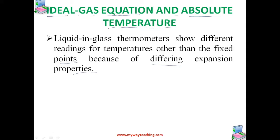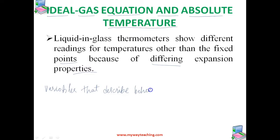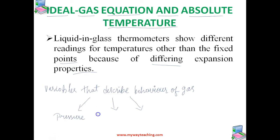The variables that describe the behavior of a given quantity of gas are pressure, volume, and temperature. These are the three most important variables that describe the behavior of a gas.